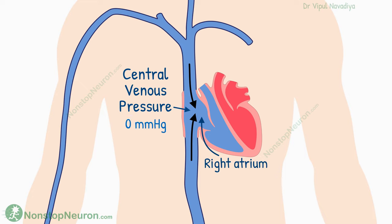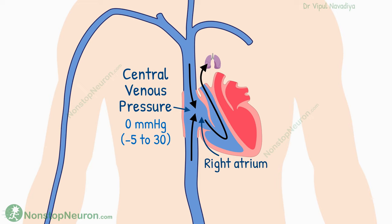Normally, it is about 0 mmHg, and it can range from minus 5 to plus 30 mmHg in different situations. Let's talk about the factors that affect central venous pressure. It is regulated by the balance between the inflow and outflow of blood in the right atrium. The factors that increase the inflow of blood increase the pressure, and the factors that decrease the inflow decrease this pressure.